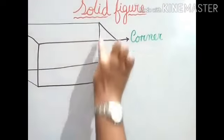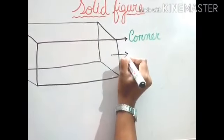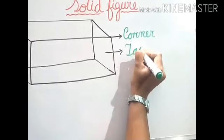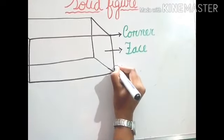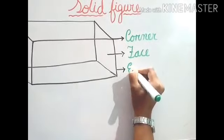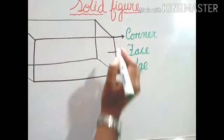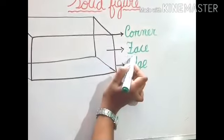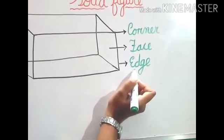Next, this face. This one we call face. And this one we call as a corner. This is where all the edges are joining, corner. This thing we call face. And this line, this one we call as edge.